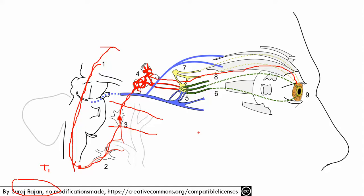Regarding the plus-or-minus nature of anhidrosis: the vasomotor innervation branches off earlier in the pathway — before the superior cervical ganglion. So when you have third-order lesions, you don't get anhidrosis because that pathway is still intact.